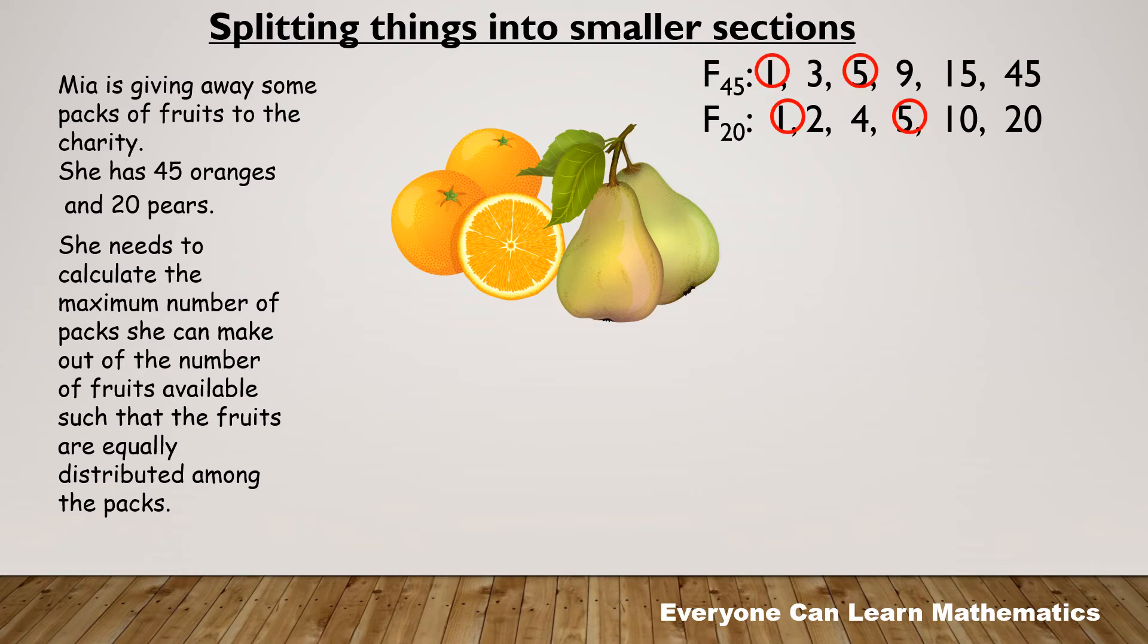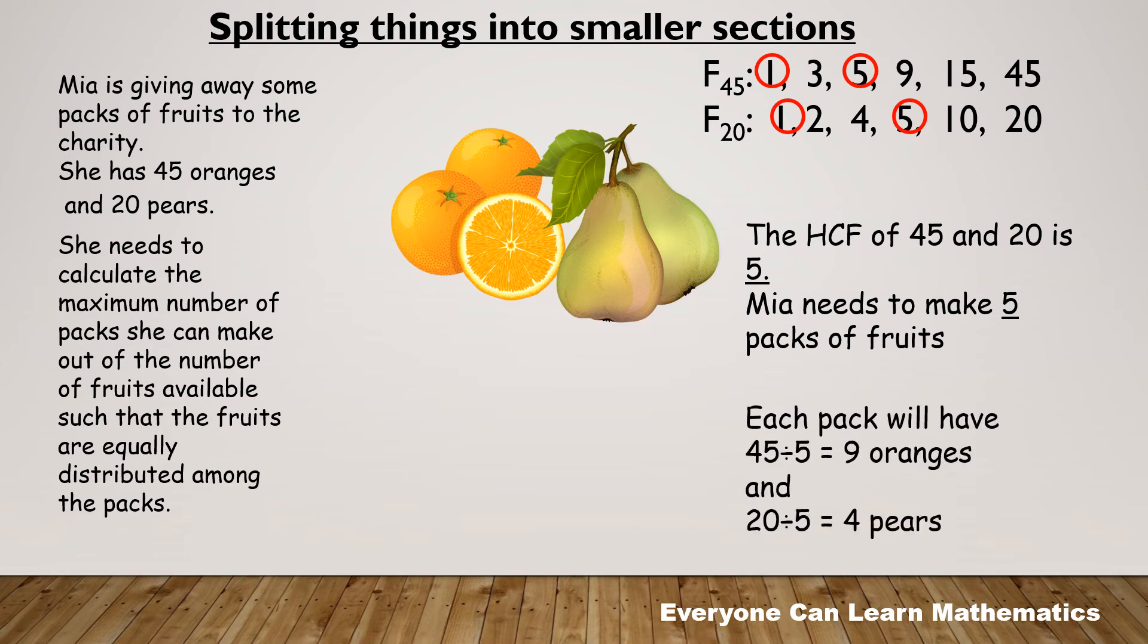By looking at the common factors, we can see five is the highest number that can be taken as the HCF. So Mia needs to make five packs of fruits. We can also verify our answer by calculating how many oranges or pears there would be in one pack. There would be nine oranges and four pears in one pack.